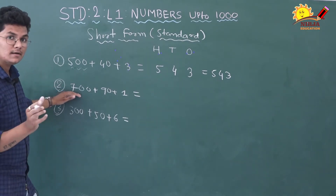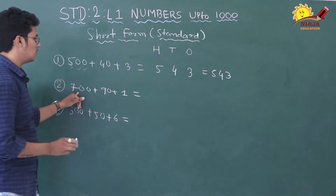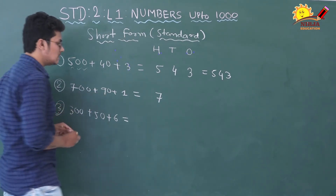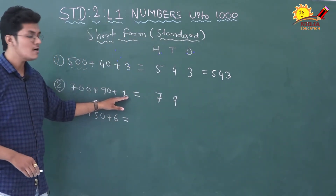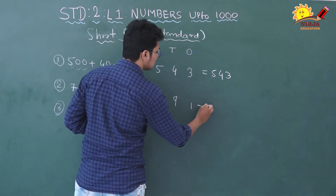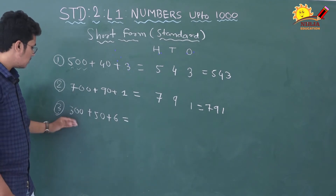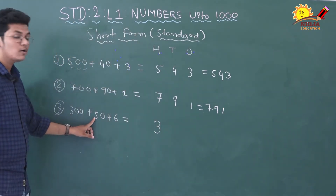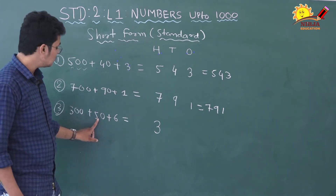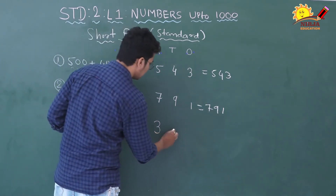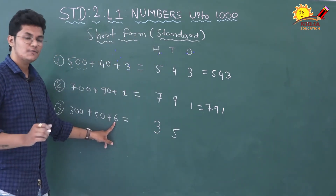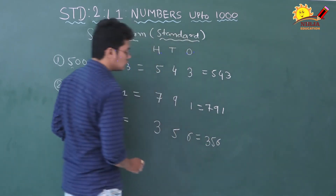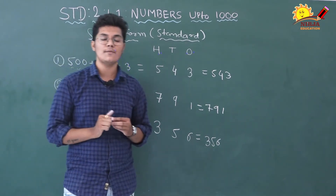Next, seven hundred. Hundred matlab ki seven hundreds ke place peh hoga. To, seven ko hundreds ke place peh likhenge. Phir ninety — nine tens ke place peh hoga. So, nine hum tens ke place peh likhenge. Or, last mein hai one — one ke place peh aayega. So, humara answer hai seven hundred ninety one. Next, three hundred — three hundreds ke place peh hoga. Phir hai fifty — five tens ke place peh hoga. So, five tens ke place peh likhenge. Or, last hai six — six ones ke place peh hai. To, humara answer huwa three hundred fifty six. So, expanded form mein likhna bhi aasaan hai, or short form mein likhna bhi easy hai.